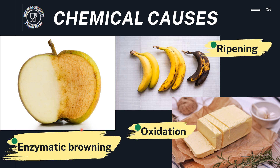Another example is enzymatic browning, seen in fruits like apples or vegetables like brinjal. If you cut the food and leave it in the presence of oxygen and light, browning occurs. This is due to enzymes present within the food, but the chemical reaction happens when it comes in contact with oxygen or light. These are all examples of chemical causes of spoilage. If not taken care of immediately, the food will eventually become unfit for human consumption.